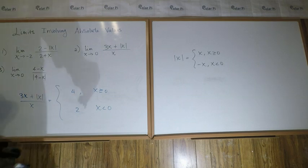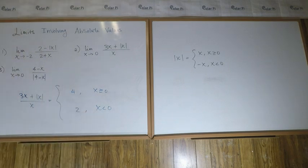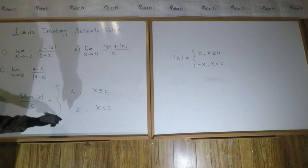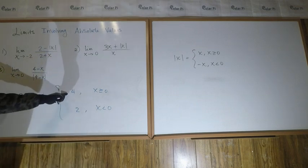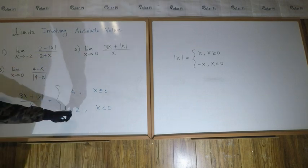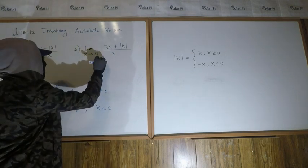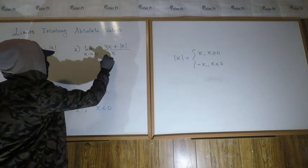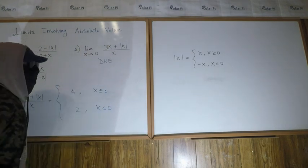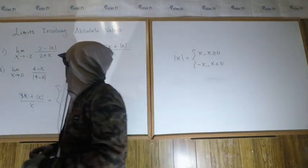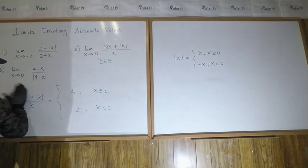42 is my favorite number, but that aside: the limit as x goes to zero — the limit from the right is 4 and the limit from the left is 2. Since these are not equal, this limit does not exist.